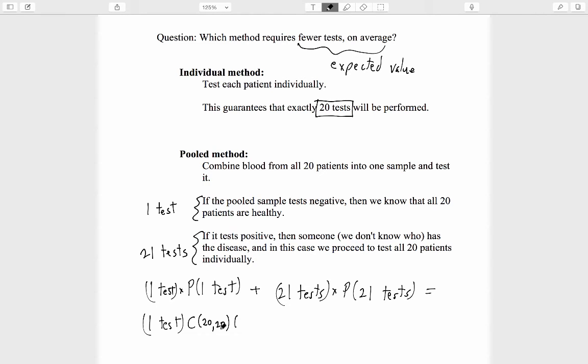So we are computing 20 choose 20, the probability that there are 20 people who are healthy, times .99 raised to the 20, times .01 raised to the zero.